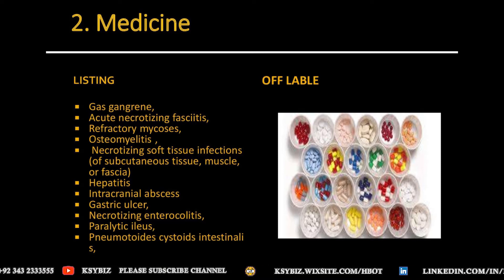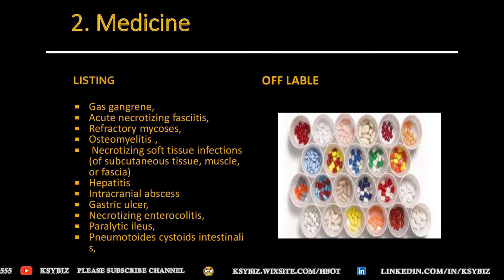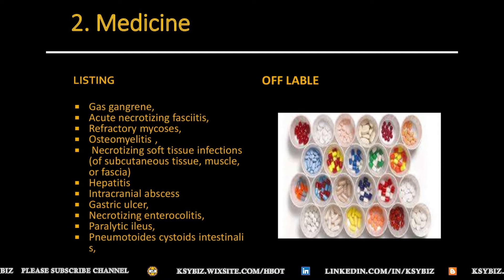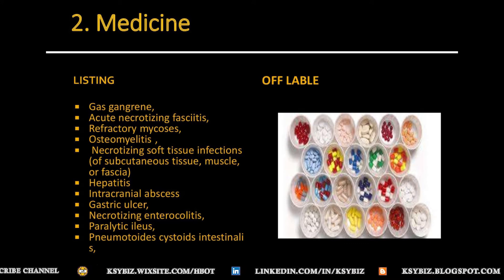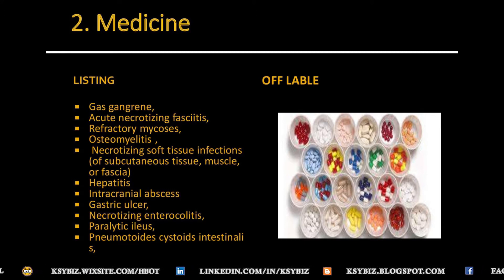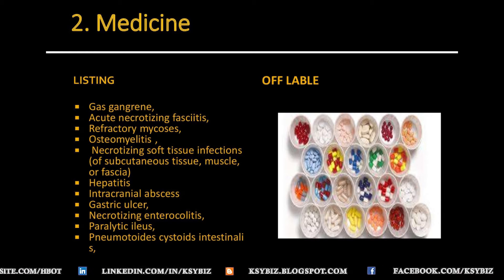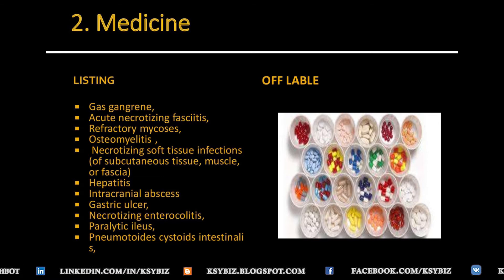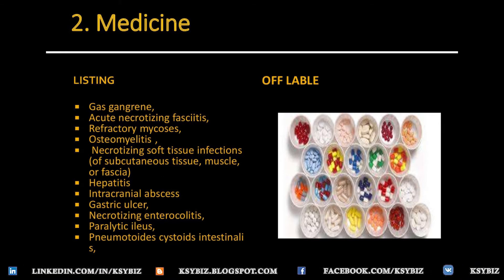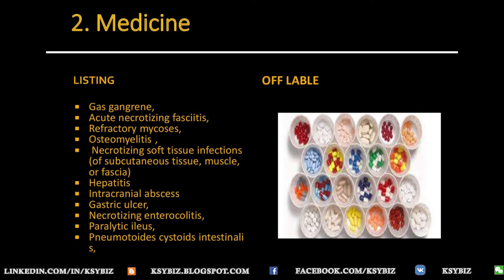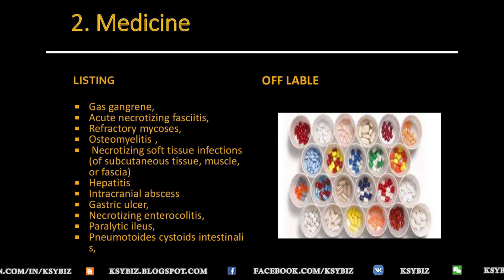In the second category, related to the medical specialty, there are diseases starting from life-threatening conditions like gas gangrene, necrotizing fasciitis, refractive mycosis, hepatitis, intracranial abscess, gastric ulcer, necrotizing enterocolitis, paralytic ileus, pneumatitis, and cystitis intestinalis. These diseases are off-label, meaning the patient would pay from their own pocket.